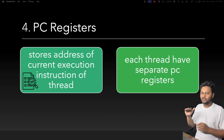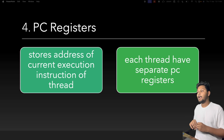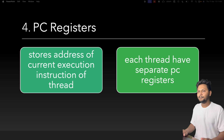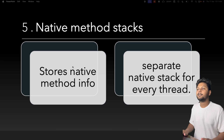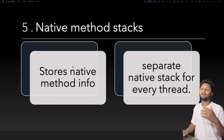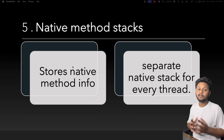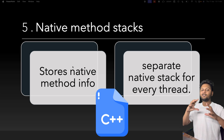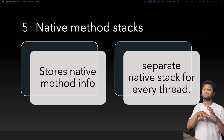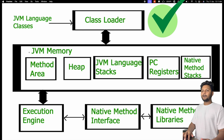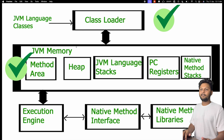PC registers store the address of the current execution instruction for each thread. Each thread has a separate PC register, so it is not a shared resource. Native method stacks store native method information — methods that are written in some other language and integrated inside Java code.